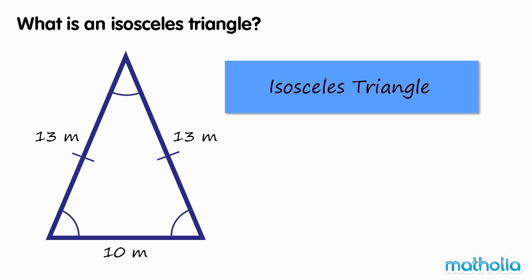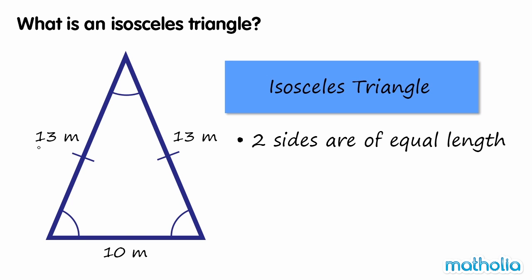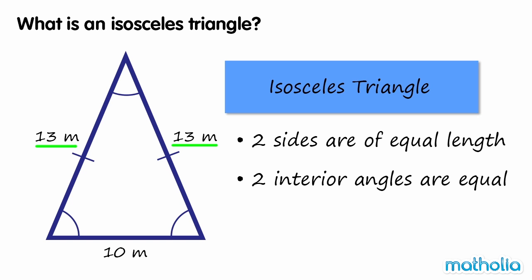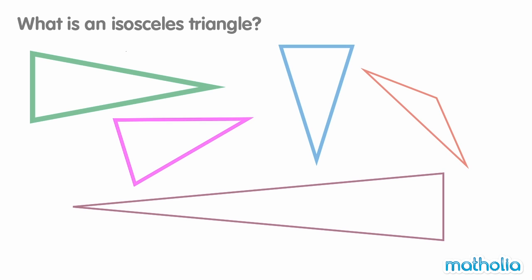What is an isosceles triangle? Isosceles triangles have two sides that are of equal length. Two of the interior angles are equal. All of these triangles are isosceles triangles.